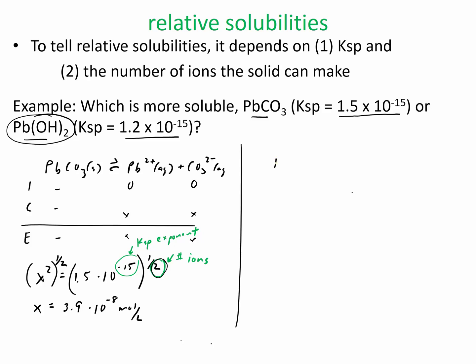And now if I do this problem, Pb(OH)2, you'll see that it makes 3 ions instead of 2. This will be plus 2x. I'm going to ignore any OHs from water. Plus 2x here.